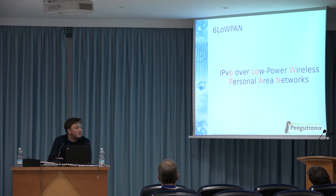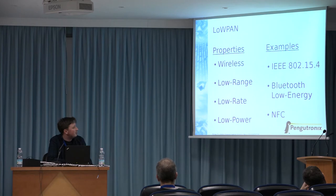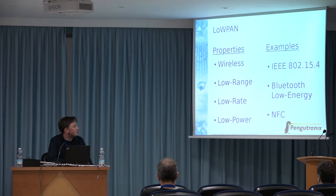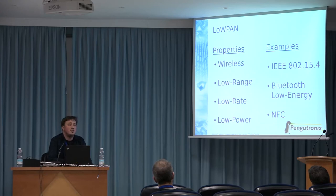6LoWPAN is a standard by IETF and it stands for IPv6 over low-power wireless personal area networks. A LoWPAN has several properties: it's wireless communication with low range, low weight, and also low power. You can also add low cost because these transceivers are really cheap. Examples of such a LoWPAN layer include 802.15.4, Bluetooth Low Energy, and there are also drafts about running 6LoWPAN over NFC, near-field communication, ultra low energy DECT, low power Wi-Fi, and power line.